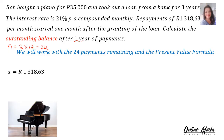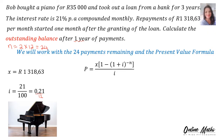Our X is R1,318.63. I, the interest rate, is 21 divided by 100, which is 0.21. And remember, only inside our sum we will divide by 12 to compensate for the monthly payments.